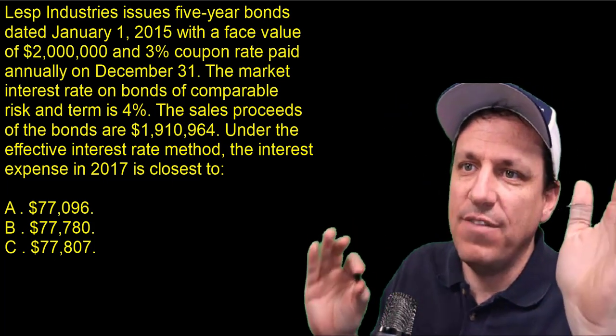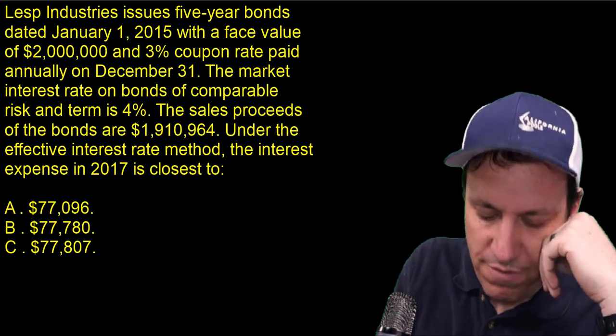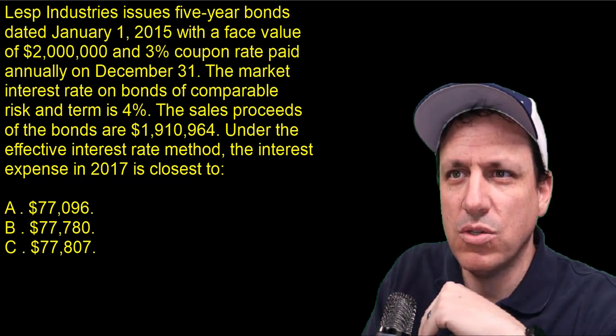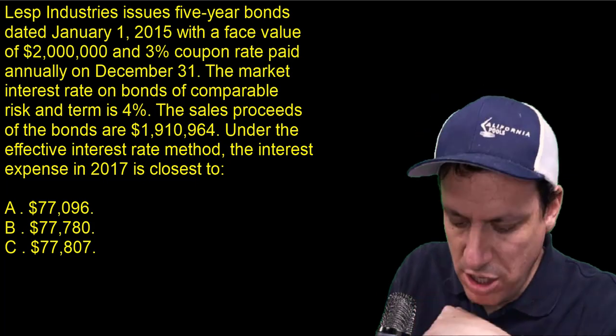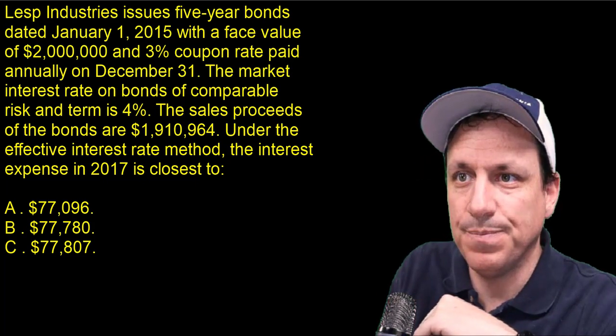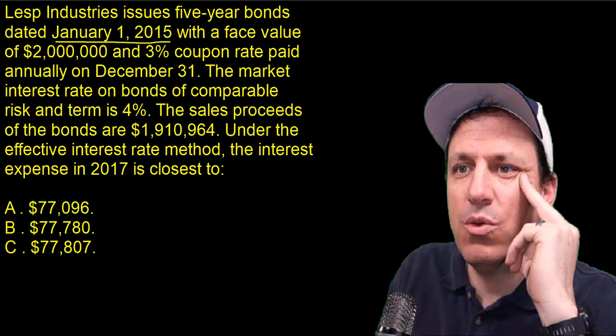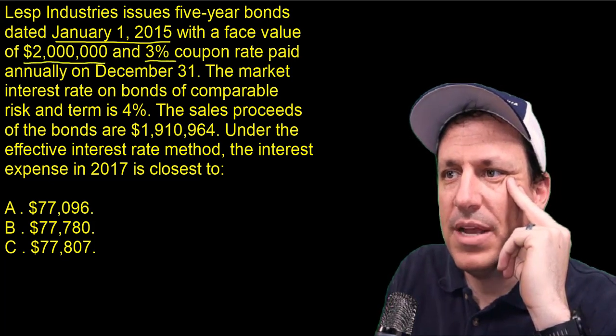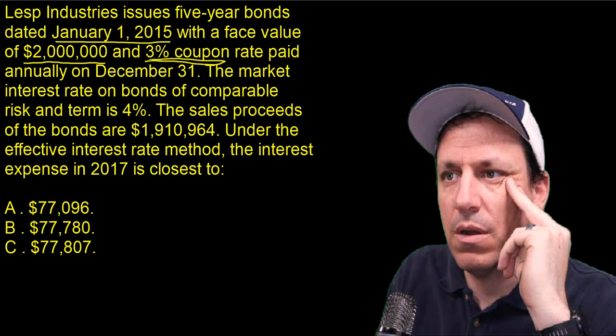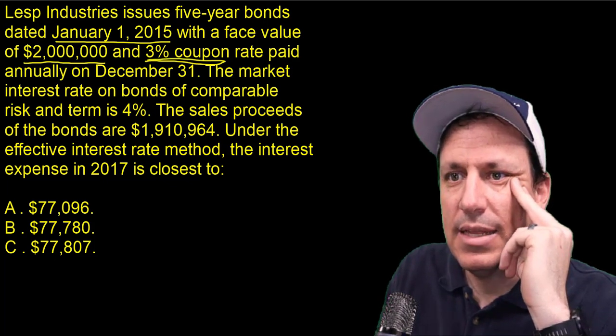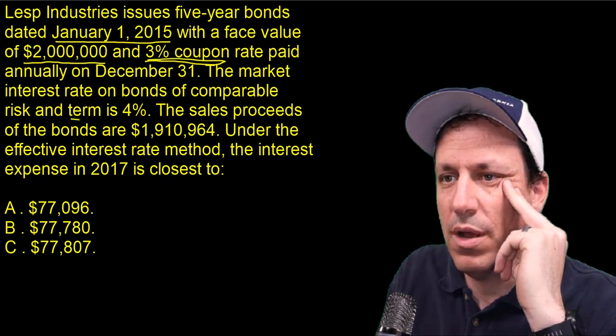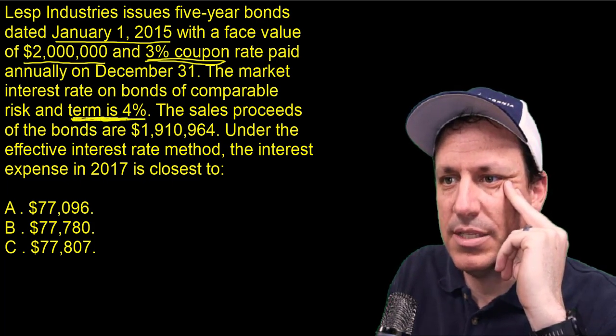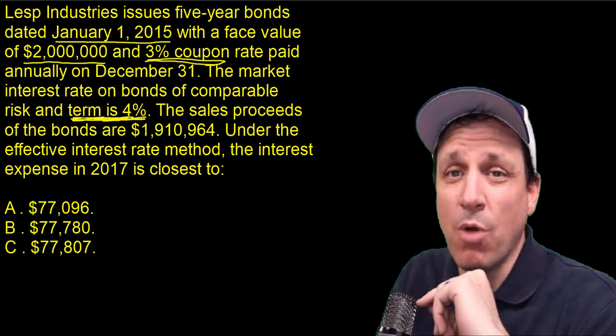So there's a company that issues a five-year bond dated January 1st, 2015. It's important to remember dates are important. So this one is identifying January 1st, 2015, with a face value of $2 million, that's the amount that is the par value. It pays a 3% coupon rate, and the comparable risk in terms for a bond of similar company and size and debt amount is about 4%. That's the market rate of interest.